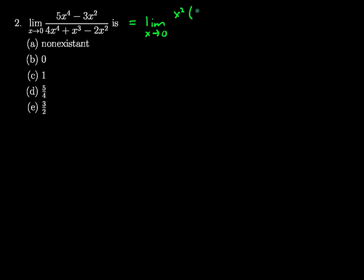x squared times the quantity 5x squared minus 3 in the numerator. And in the denominator, I take out an x squared as well. So I'm left with the quantity 4x squared plus x minus 2.